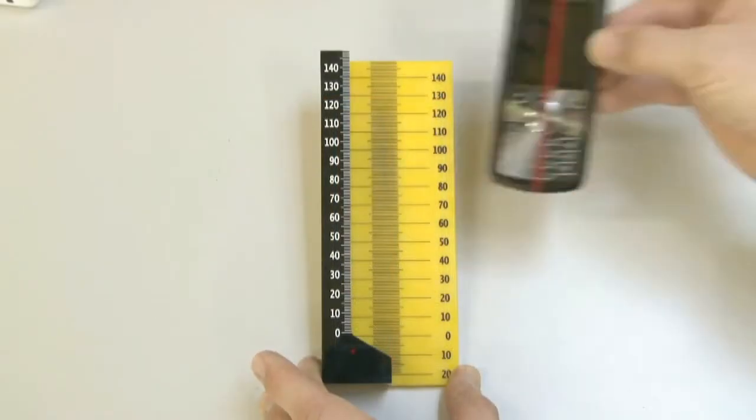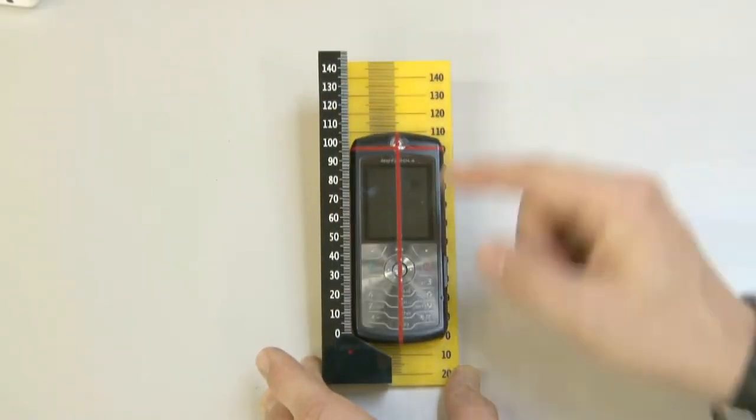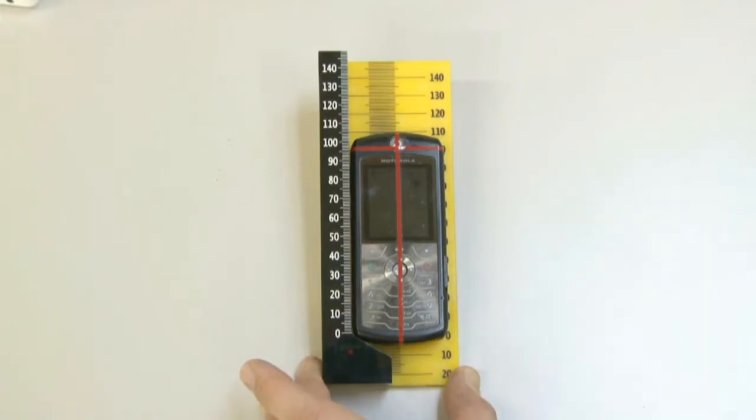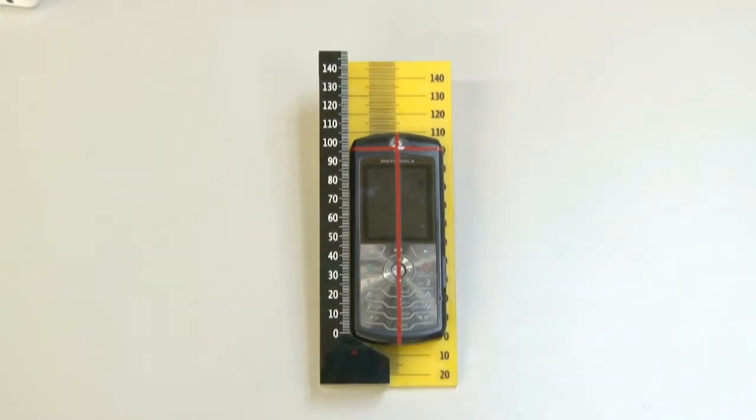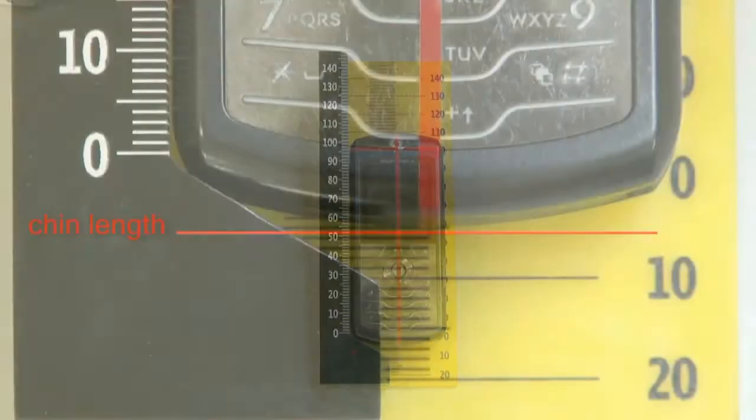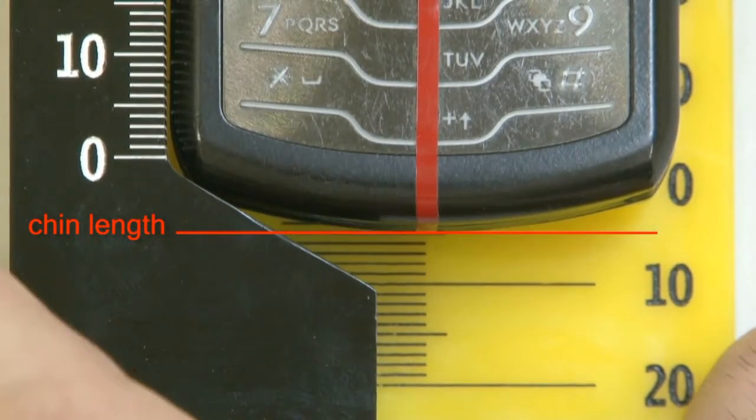Place the device on the alignment tool B and fit it into the corner between the slab and the guiding strip. Slide the device down until it reaches the angled corner. Record the chin length from the scale on the alignment tool.